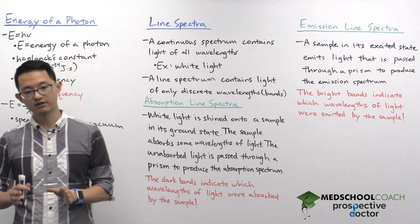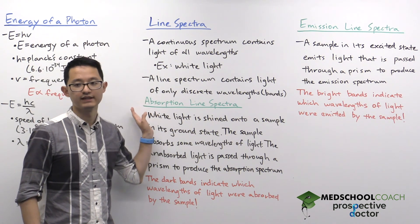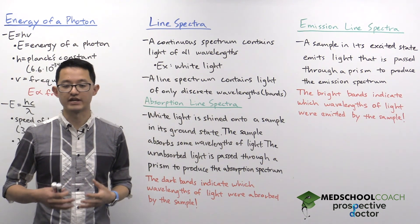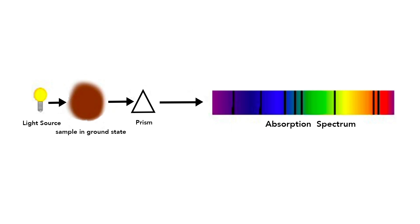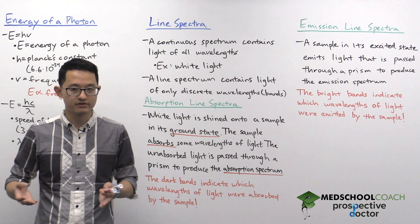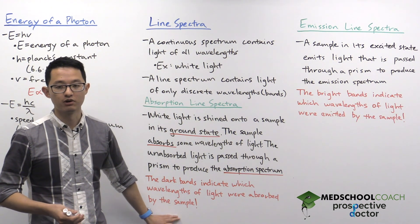There are two types of line spectra to know for the MCAT. The first is absorption line spectra. To generate it, you take a sample in its ground state and shine white light on it. The sample absorbs some wavelengths of that light, and whatever light is unabsorbed is passed through a prism to form the absorption spectrum. The absorption spectrum looks similar to the continuous spectrum, except there are a few dark bands where light has been absorbed — those dark bands correspond to the wavelengths absorbed by your sample.